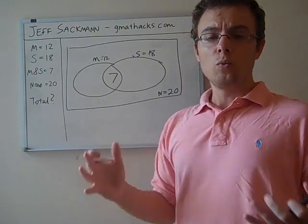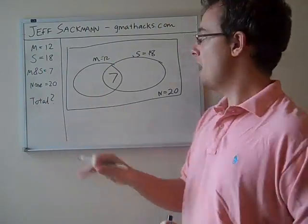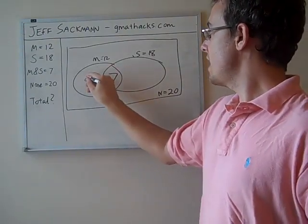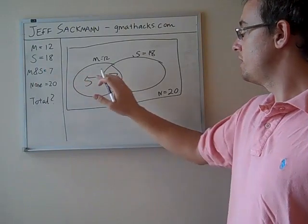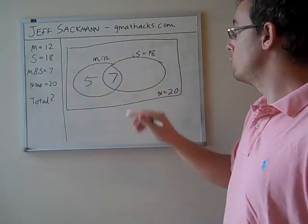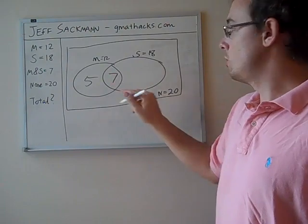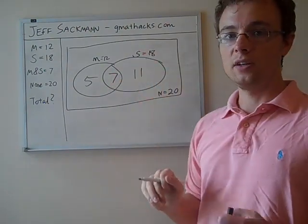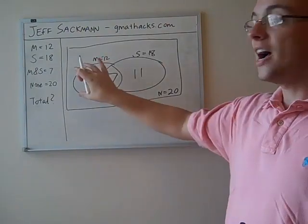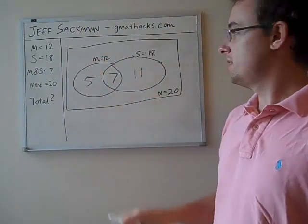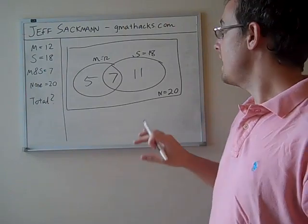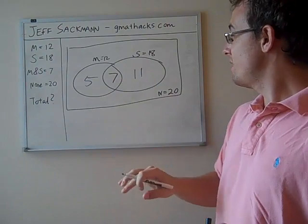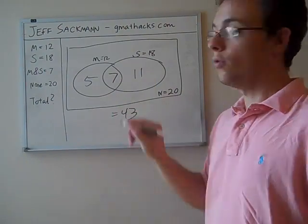So we can use the diagram to help us do some of the necessary math. If there are 12 math majors and 7 people are doing both, that means there are 5 that are just doing math, 5 and 7, that's the 12 in this oval. If there are 18 science majors and 7 overlap, that's 11, 11 and 7 gives us 18. So we can put all this together, we have 5 math onlys, 7 math and science, 11 science only, 20 nones, 20 plus 11 plus 7 plus 5, that gives us 43, that's our total.